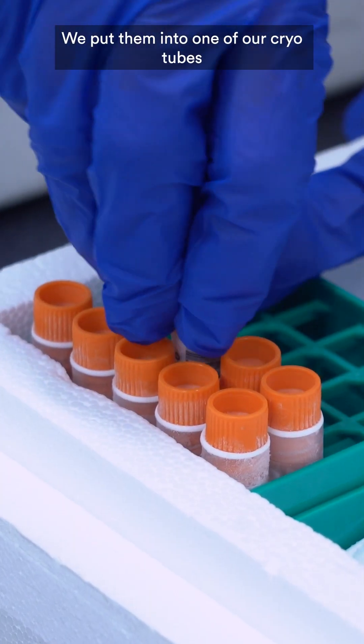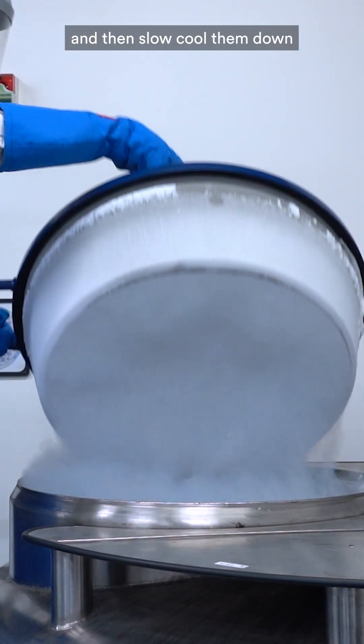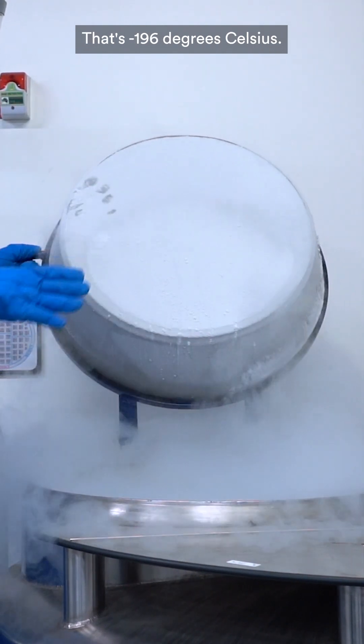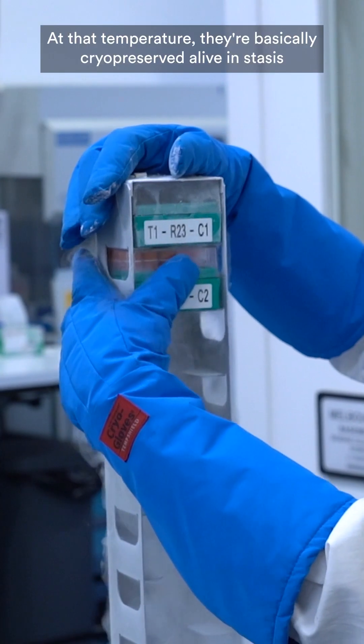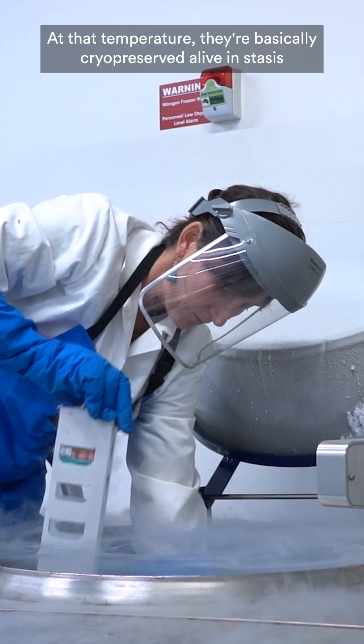We put them into one of our cryo tubes and then slow cool them down to liquid nitrogen temperature. That's minus 196 degrees Celsius. At that temperature, they're basically cryopreserved alive in stasis.